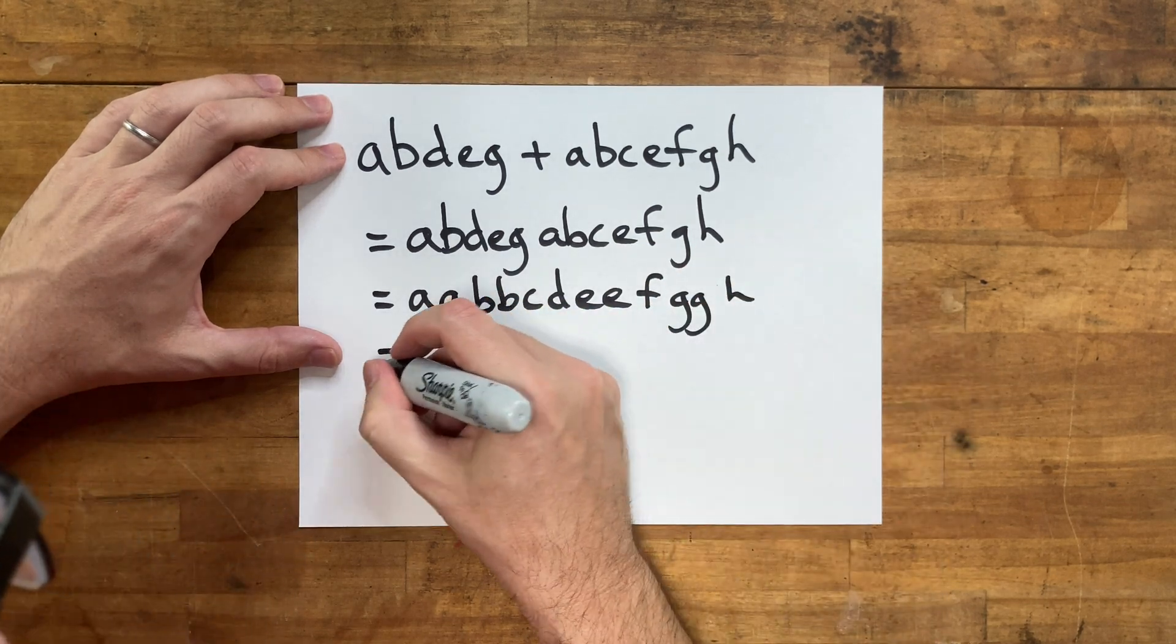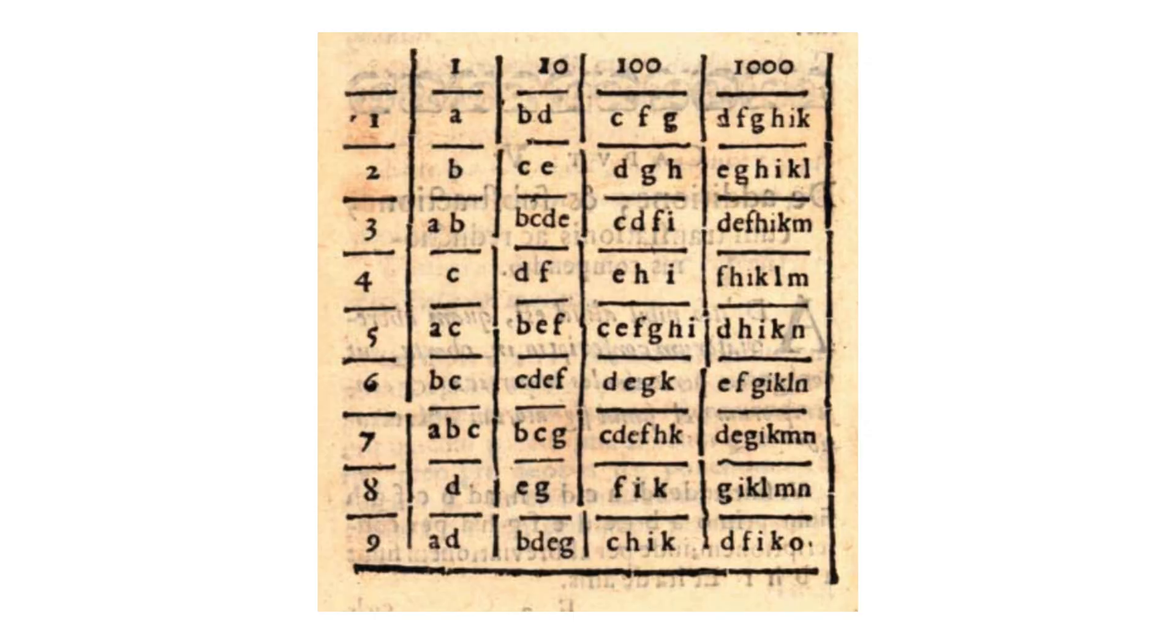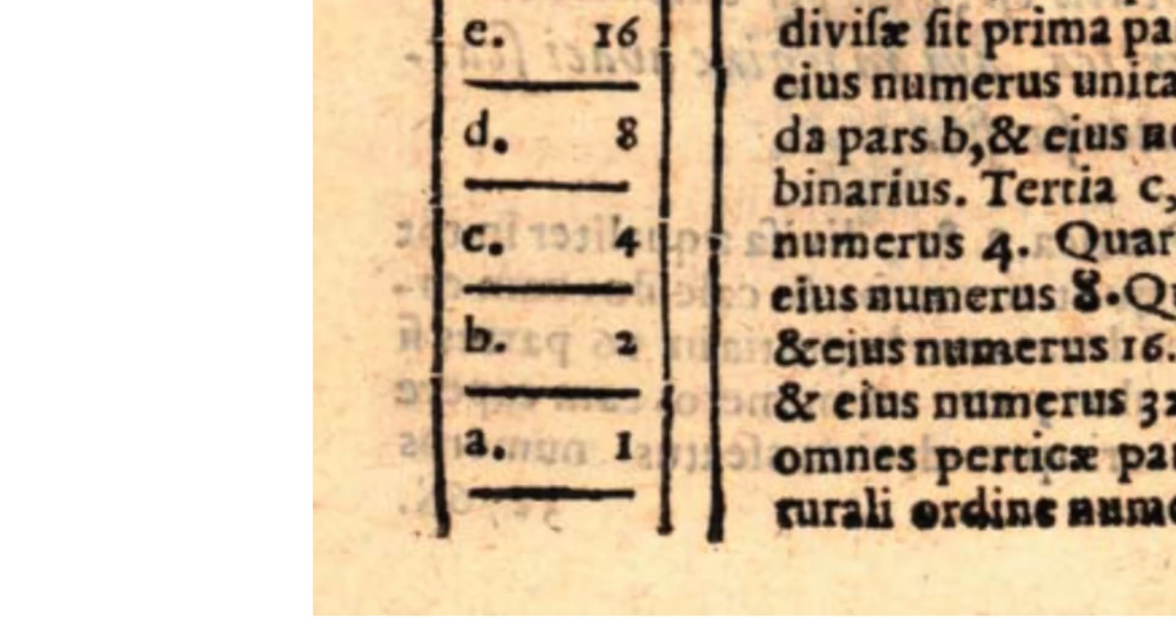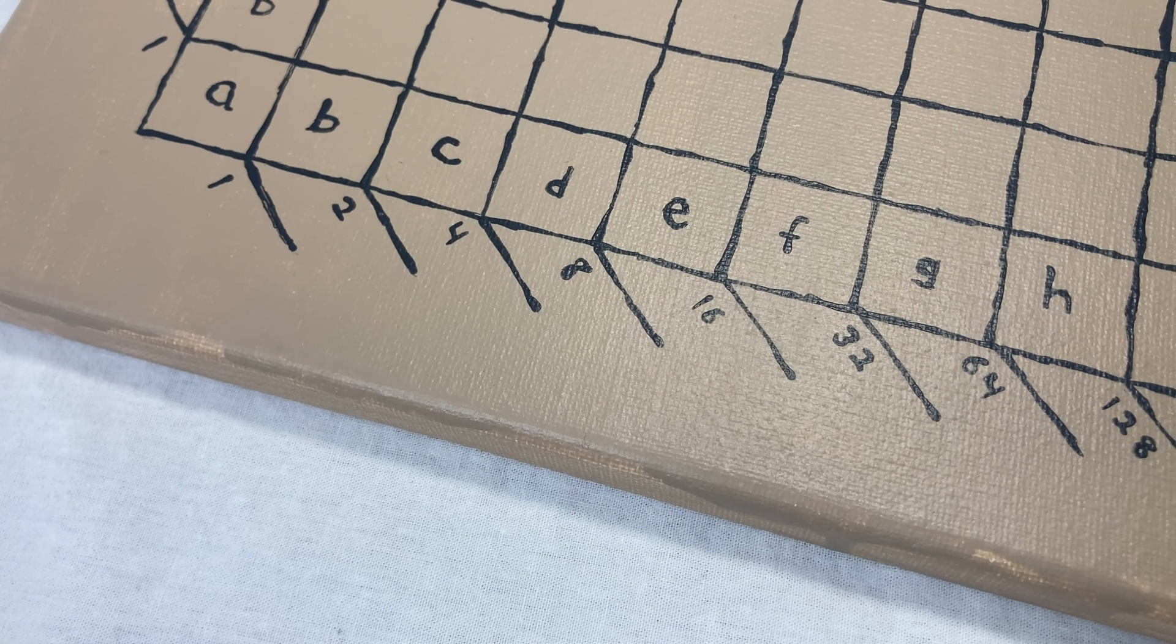Here's the idea. A is 1, B is 2, C is 4, D is 8. Each one represents a power of 2. You can see it on the board there. Those are the values for each symbol.